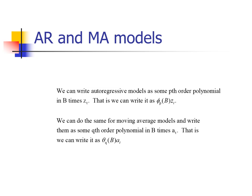Not only can we use the backshift operator to express differencing, we can also use it to concisely express our ARMA and moving average models. We can write an autoregressive model as a pth-order polynomial in B times Z sub T. That expression, phi sub P of B times Z sub T, is a polynomial of order P in B with coefficients phi. We can do the same for moving average models: a moving average model is a qth-order polynomial in B times A sub T.